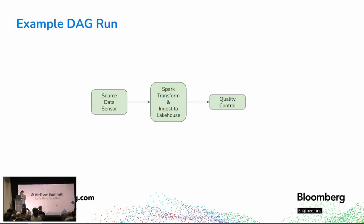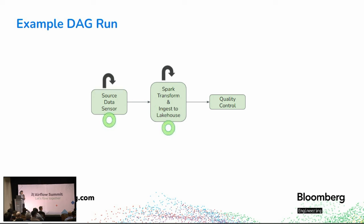In this simple DAG we might have different failure scenarios: the sensor could fail, your transformation task could fail. Regardless, it's going to be important for us to design our DAG to be recovery-friendly, so that these tasks will eventually succeed when the underlying issues are resolved.